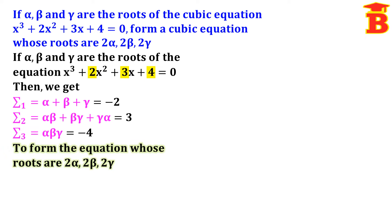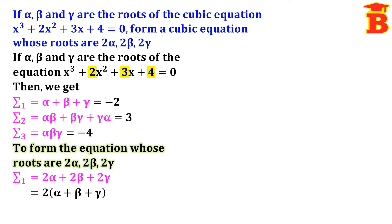Now we have to form the equation whose roots are 2 alpha, 2 beta, 2 gamma. For this we need to find the new sigma 1, sigma 2, sigma 3, then form the cubic equation. First, new sigma 1 equals 2 alpha plus 2 beta plus 2 gamma. Taking 2 as a common factor gives 2 times (alpha plus beta plus gamma). Substituting alpha plus beta plus gamma equals minus 2, we get 2 times minus 2, which equals minus 4.